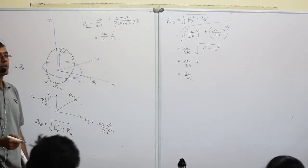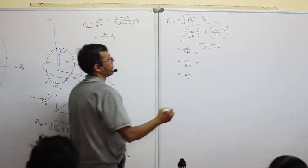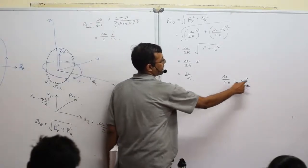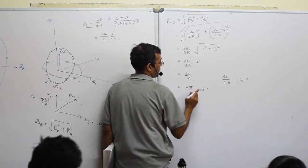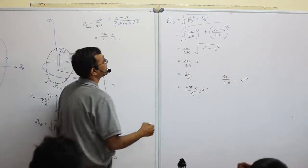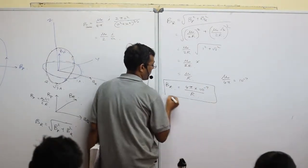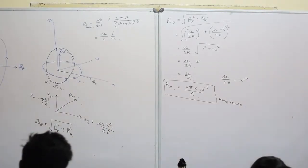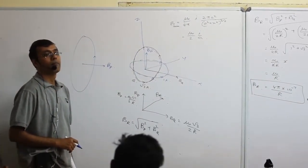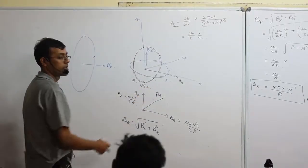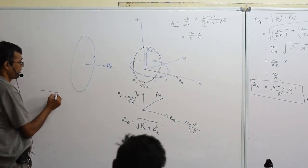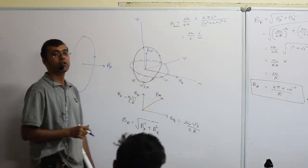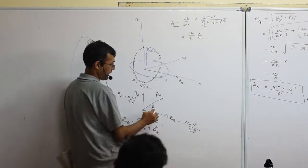Magnetic field is a vector, so we also need the direction. To find angle θ: tan θ = B_P / B_Q. Substituting: B_P = μ₀/2R and B_Q = μ₀√3/2R, so μ₀/2R cancels, leaving 1/√3. Since tan 30° = 1/√3, θ = 30°. Good practice is to state: 30° with respect to B_Q, since someone else might find the complementary angle with respect to B_P.